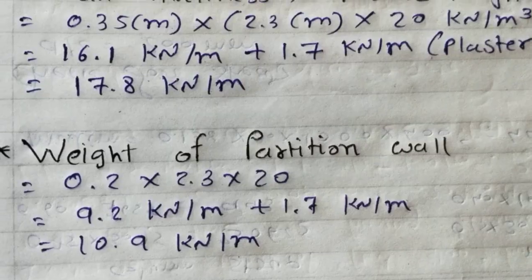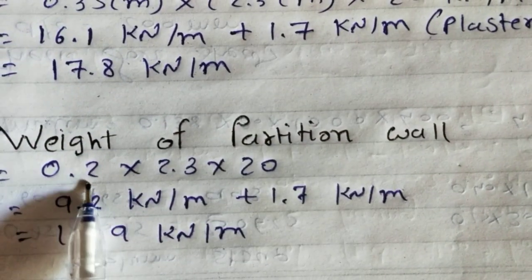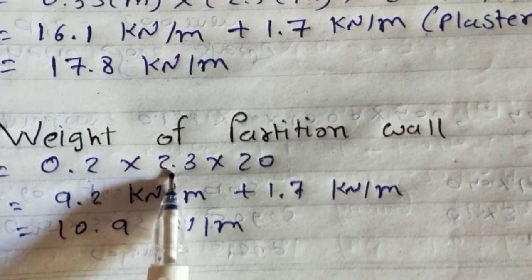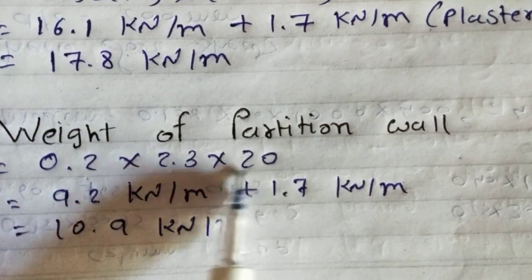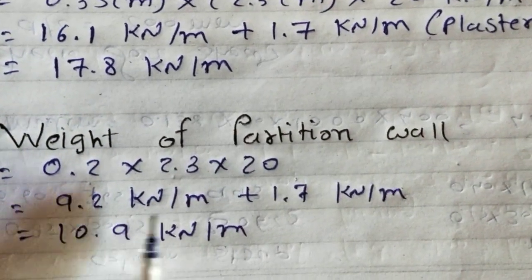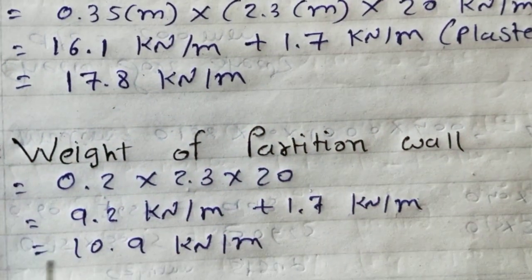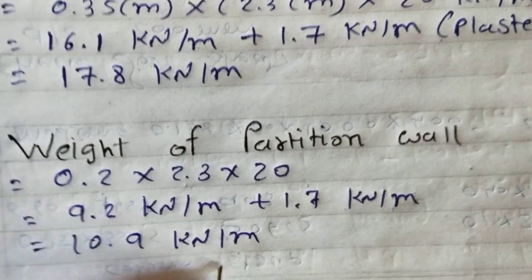Then next, weight of partition wall. This is 0.2 thickness of the wall, 2.3 is effective height of wall, and this is 20 density of wall. Same as well, 9.2 kN per meter plus 1.7 kN per meter plaster weight. This is 10.9 kN per meter.